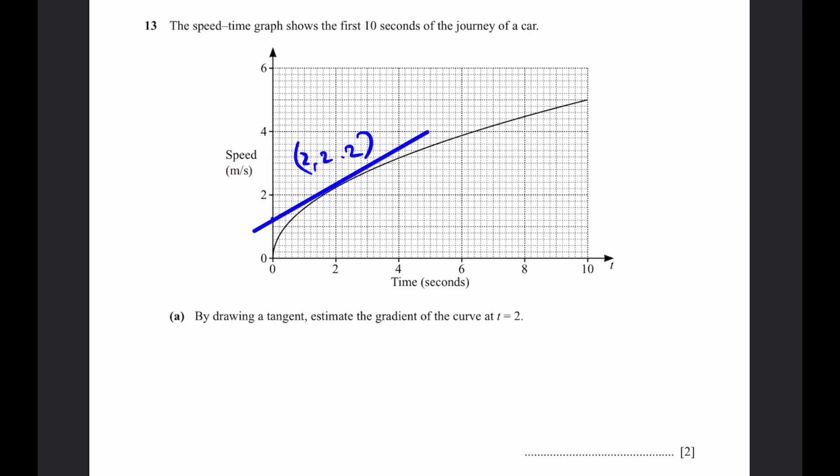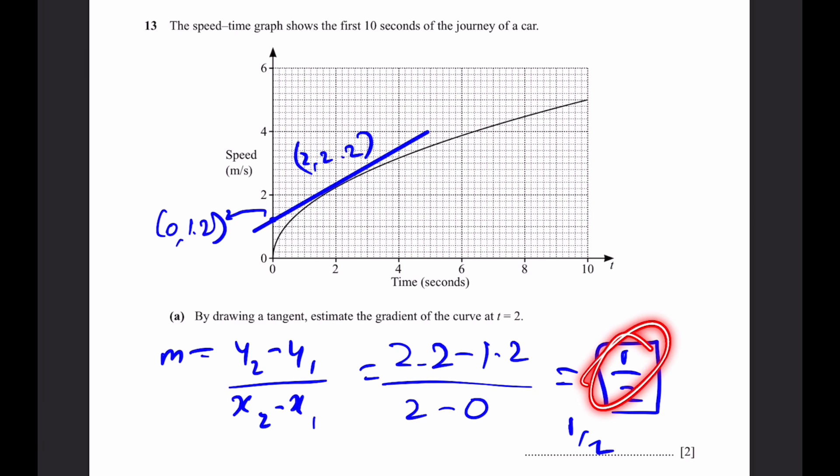Therefore the gradient, m, that's y2 minus y1 by x2 minus x1, and that will be the y of this point minus the y of this point divided by the x of this point minus the x of this point. 2.2 minus 1.2 by 2 minus 0, that's simply a half. Even if you get slightly above or slightly below this value, it's still fine. This is just an estimate of the gradient. It's not the exact gradient. There's a range of answers for this question. It just has to be near to a half.